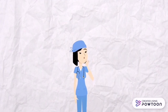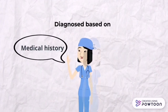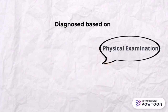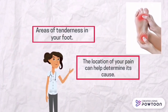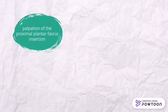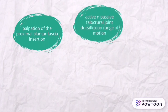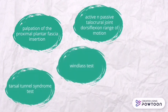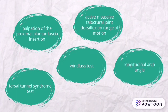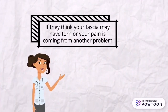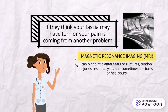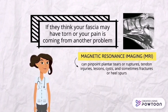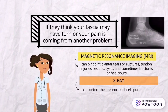To diagnose plantar fasciitis, a doctor will take a medical history and perform a physical examination. During the exam, the doctor will check for areas of tenderness in your foot, as the location of your pain can help determine its cause. The doctor will also perform palpation of the proximal plantar fascia insertion, active and passive talocrural joint dorsiflexion range of motion, tarsal tunnel syndrome test, windlass test, and longitudinal arch angle assessment. If a fascial tear is suspected or pain may be from another problem, MRI can pinpoint plantar tears or ruptures, tendon injury, lesions, cysts, and sometimes fractures. X-ray can also detect the presence of heel spurs.